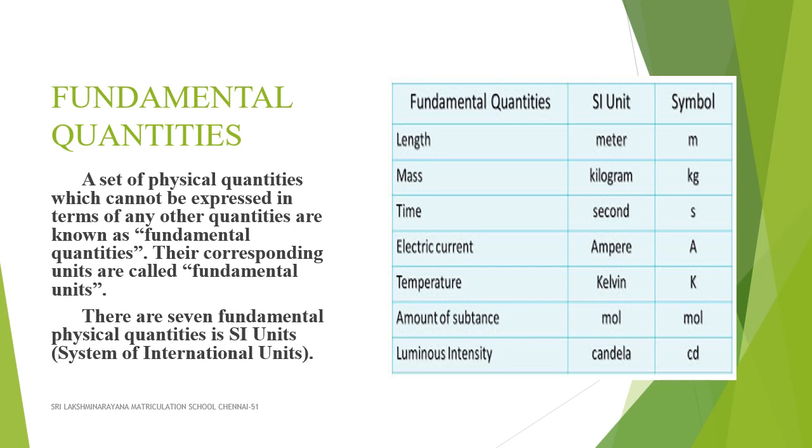There are 7 fundamental physical quantities in SI units. They are length, mass, time, electric current, temperature, amount of substance, and luminous intensity.